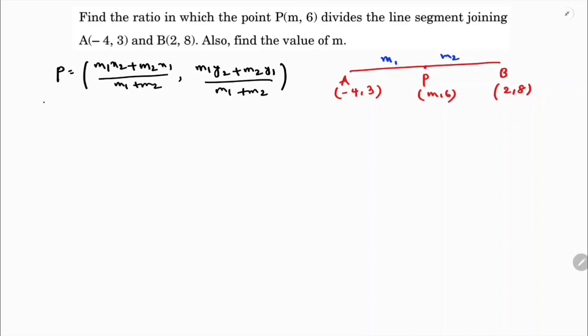So here the point is (m,6) equals, see these are X1, Y1, X2, Y2. M1×X2 + M2×X1 by M1 + M2 and M1×Y2, Y2 is 8 plus M2×Y1, Y1 is 3 by M1 + M2.